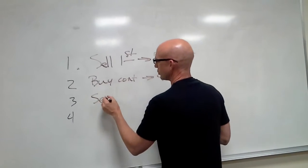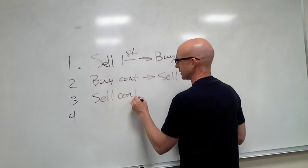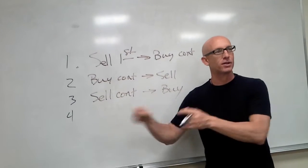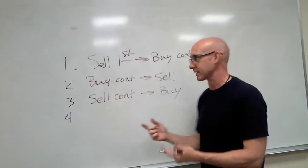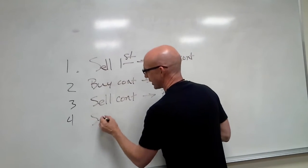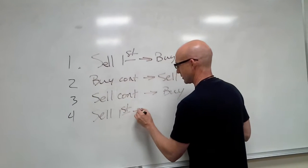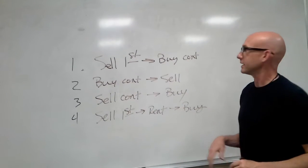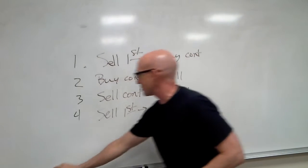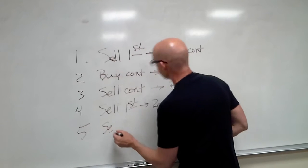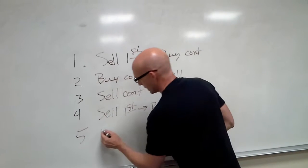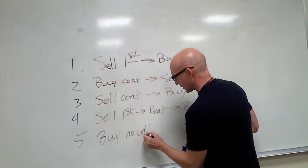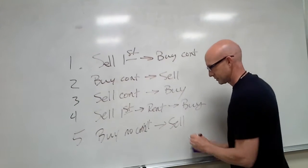The next option is you sell contingent and then buy. And that means we're going to put our house on the market and get it sold, but it's going to be contingent upon the purchase of an upleg home, of the next home we're buying. Another one is you can sell first, rent, and then buy. Now this one here is sell first and buy is actually buy contingent. The fifth way you can do this is buy with no contingencies, which means you're actually going to go ahead and close on the home and then sell.